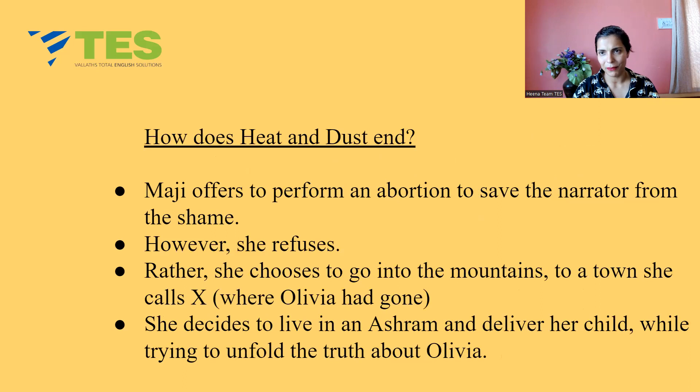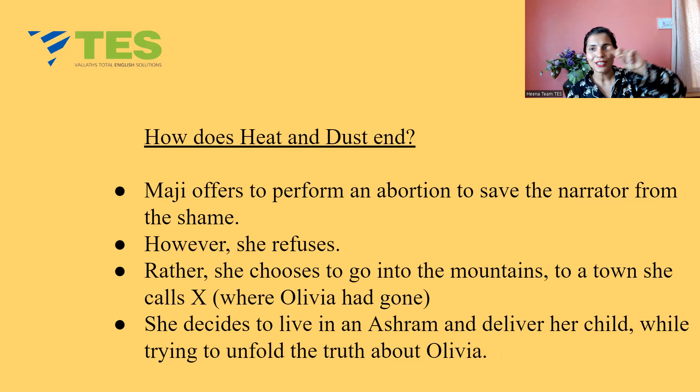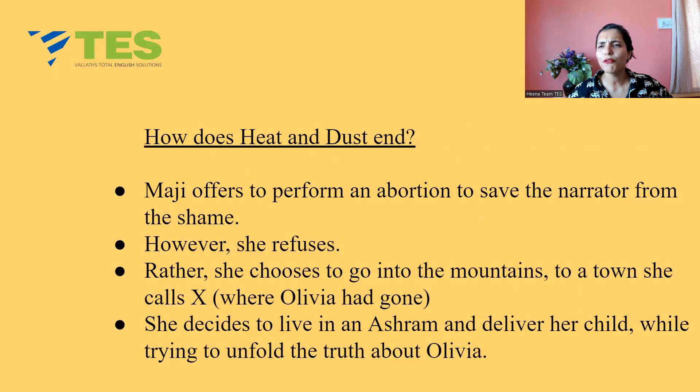How does Heat and Dust end? Maji offers to perform an abortion to save the narrator from shame. However, the narrator refuses — she wants to keep the baby, born out of wedlock. Rather, she chooses to go up into the mountains, just like Olivia, to the same town she calls X, where Olivia had gone. She decides to live in an ashram and deliver her child, while trying to unfold the truth about Olivia, her step-grandmother. And here is where Heat and Dust ends.